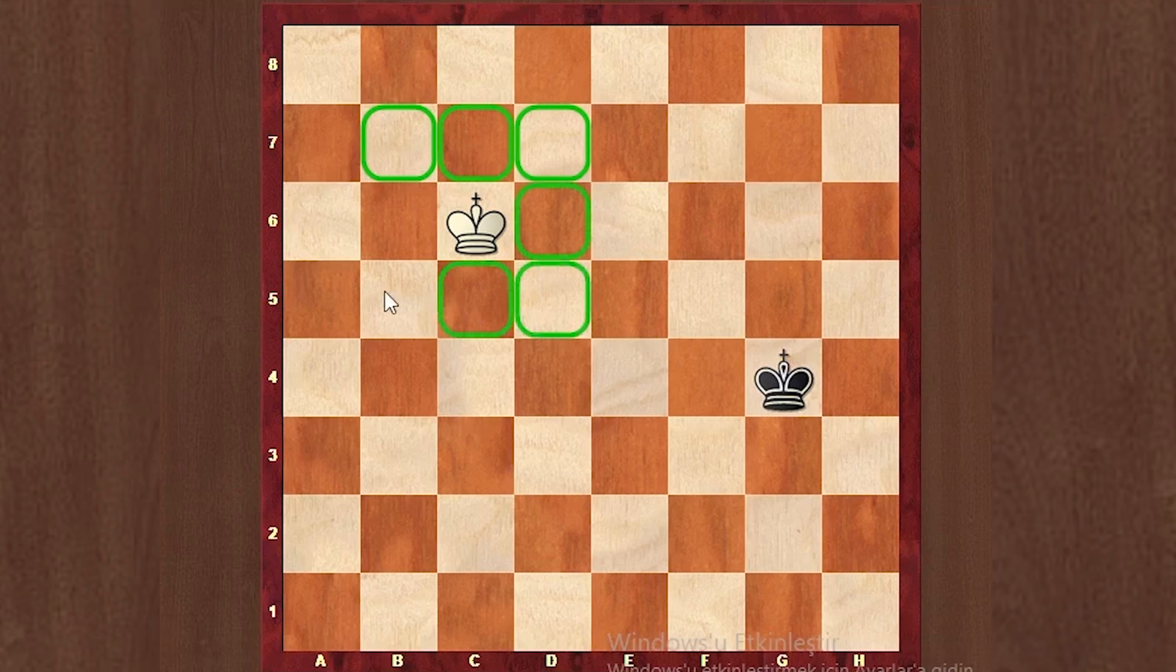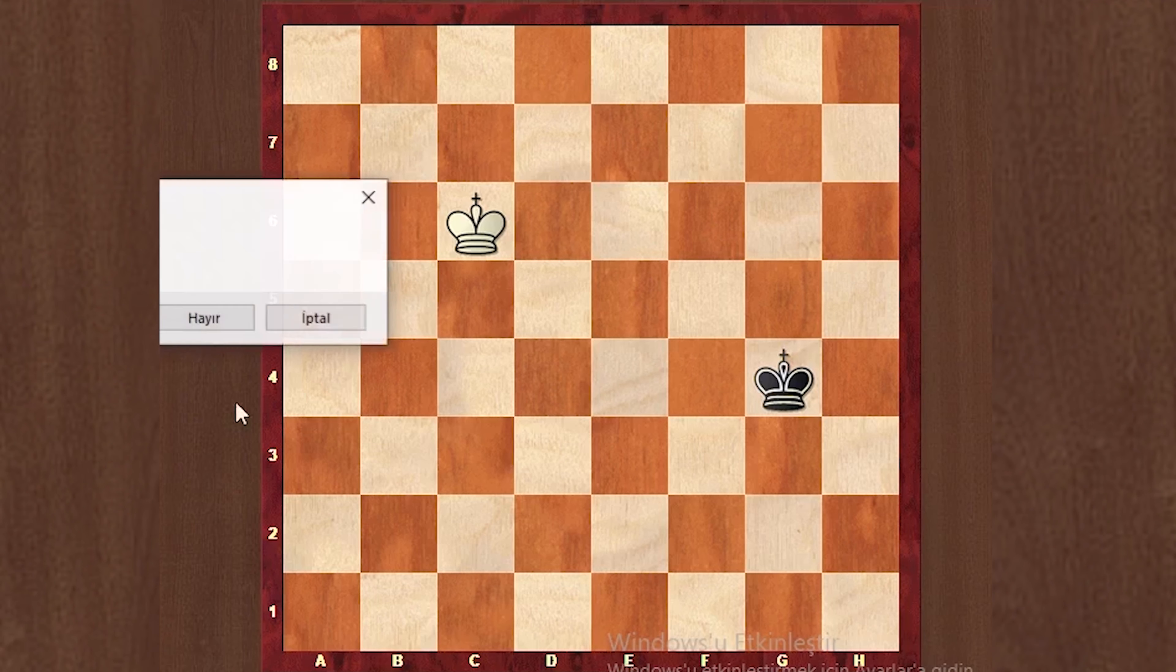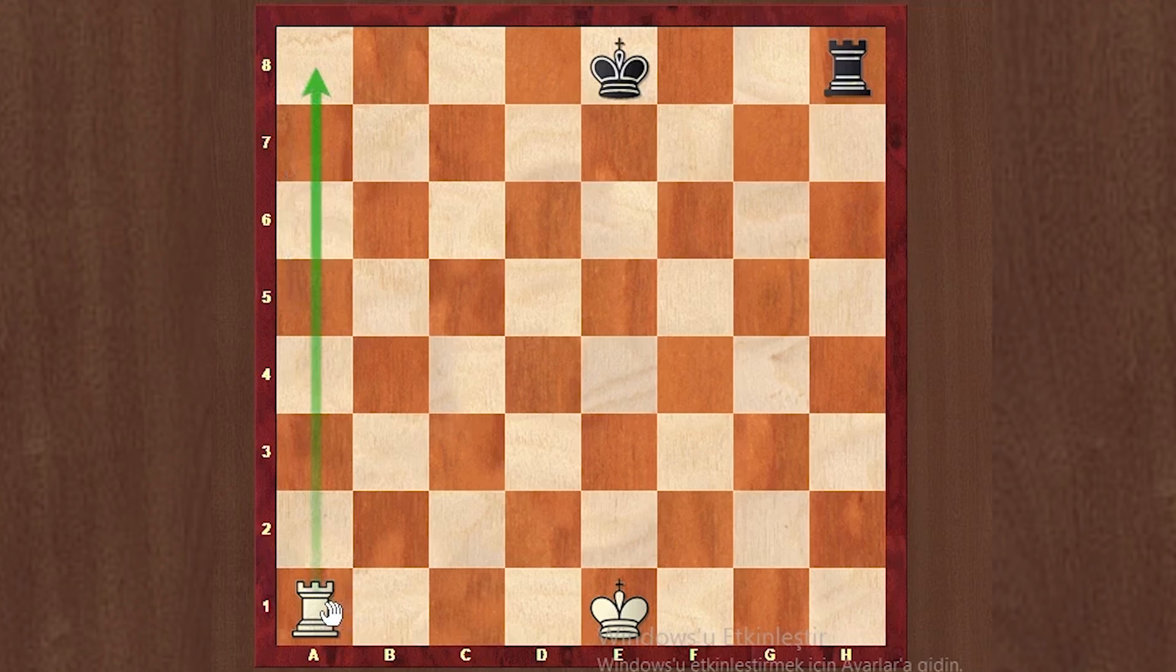Now the rooks. The rook moves vertically or horizontally. It can go all the way. Likewise, it can go horizontally, but why can't it go? Because there is an obstacle in its path. If there is no obstacle in its path, the rook can go horizontally or vertically.